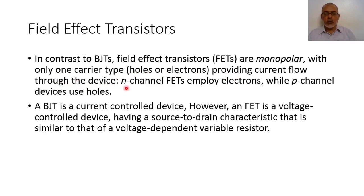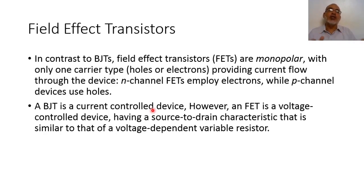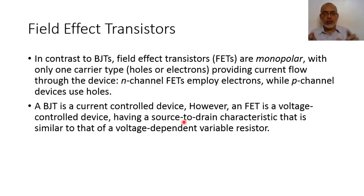An N-channel field effect transistor employs electrons while a P-channel device uses holes. The bipolar junction transistor is a current-controlled device — by controlling the base current we control the collector current. For the field effect transistor, it is a voltage-controlled device — by controlling the voltage at the gate we control the current at the drain. The field effect transistor has a source-to-drain characteristic similar to a voltage-dependent variable resistor, so by controlling the gate voltage we control the drain-source current.